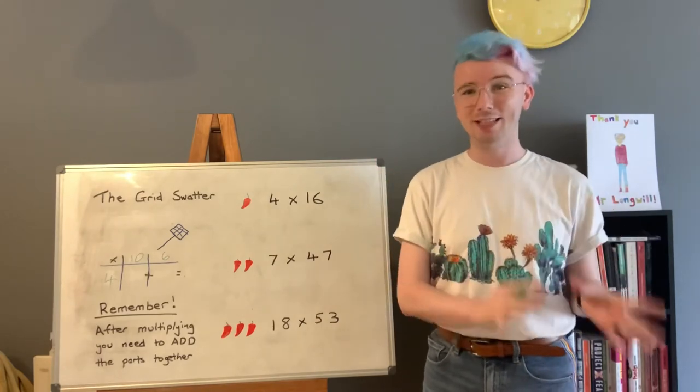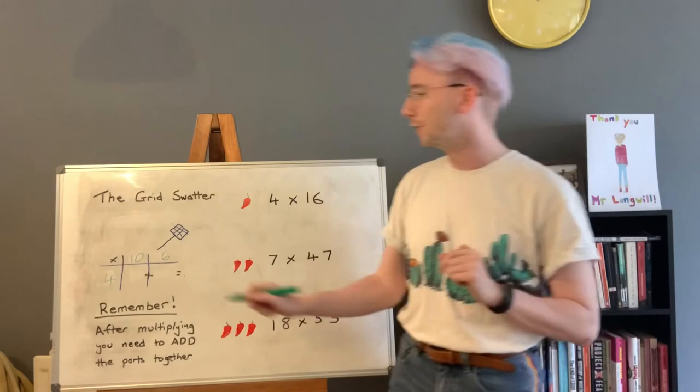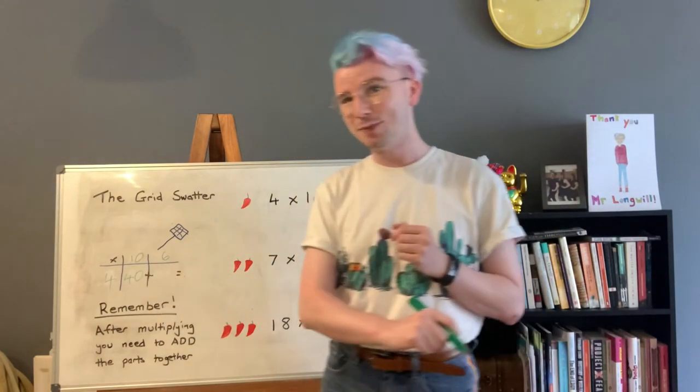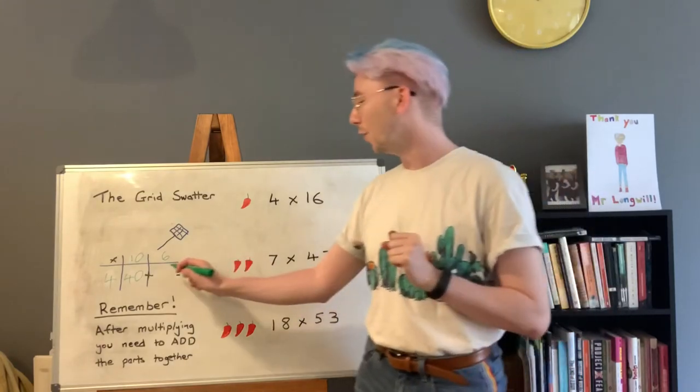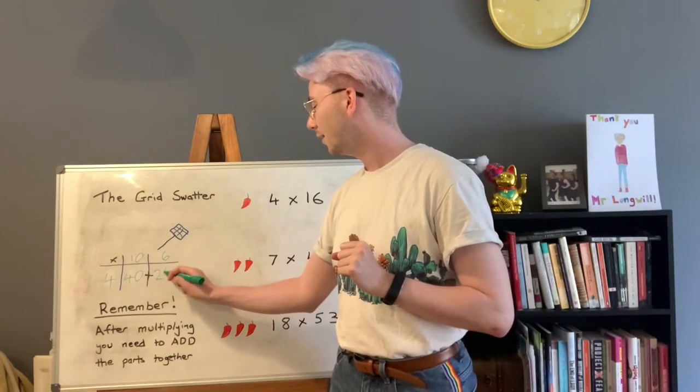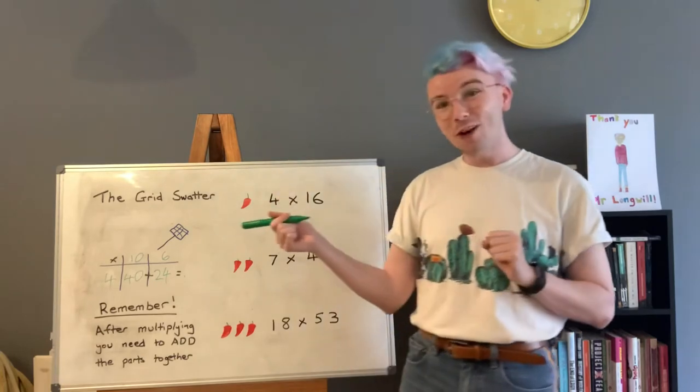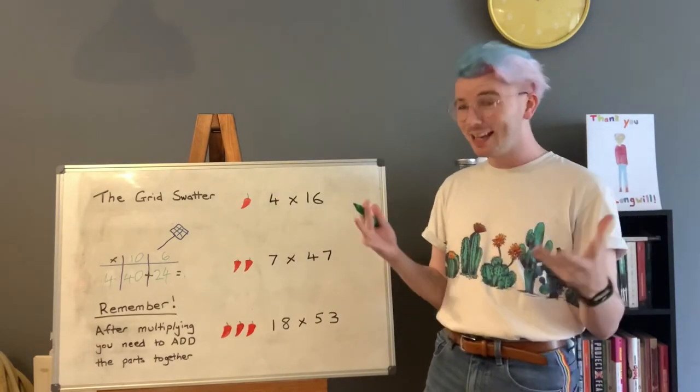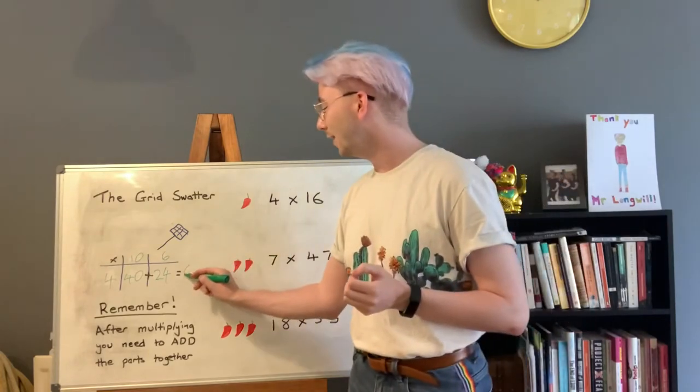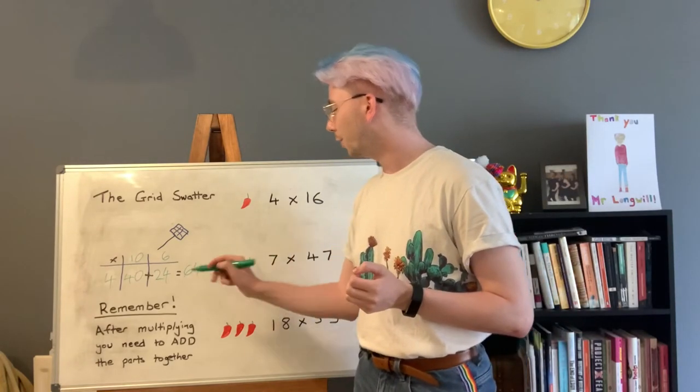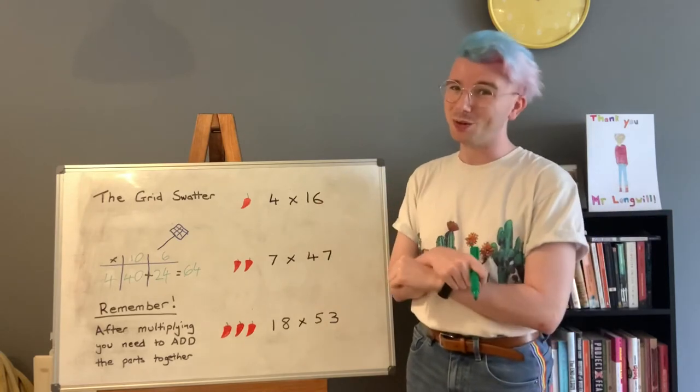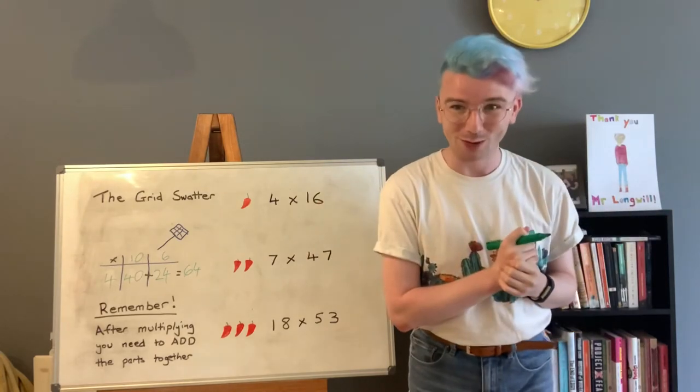We then do the parts of the 4 times table. So what is 4 times 10? That is the answer of 40. And what is 4 times 6? That is 24. What is 40 plus 24? That is 64 which is the answer to our mild problem. So how did you do? Let me know in the comments below and I'll be back in a moment with our medium solution.